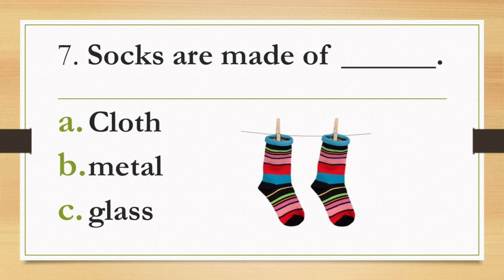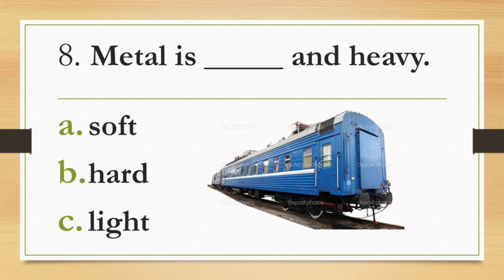Let's proceed to number 7. Sorry — number 7: Socks are made of blank. A. Cloth, B. Metal, C. Glass.